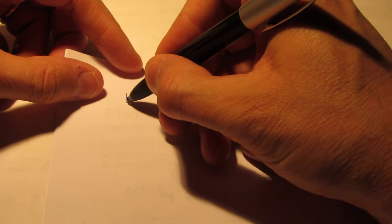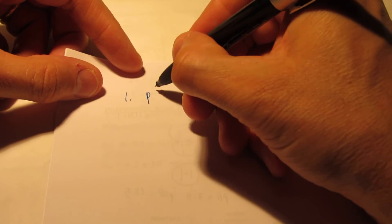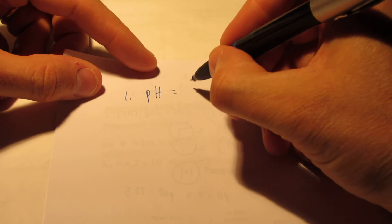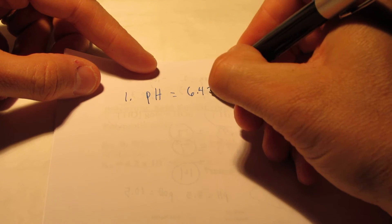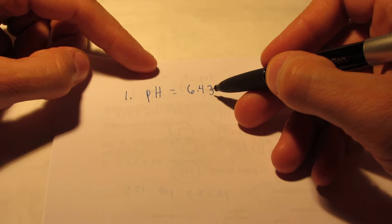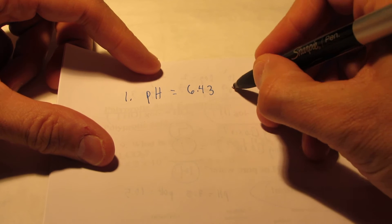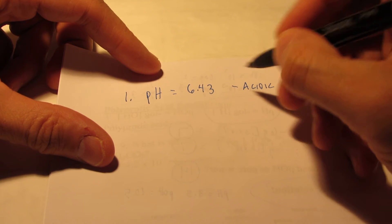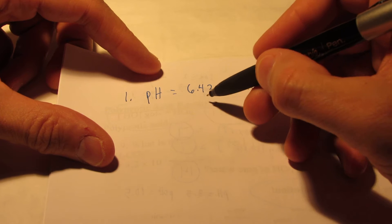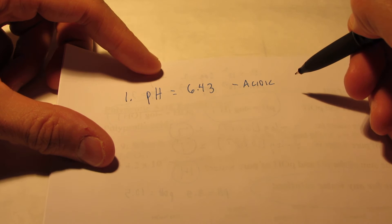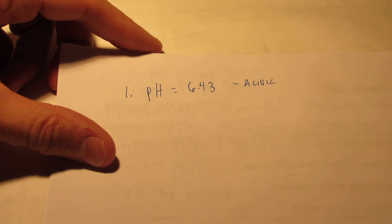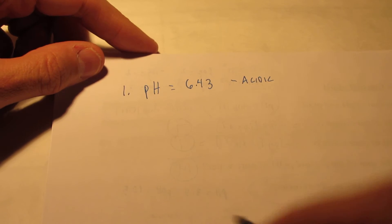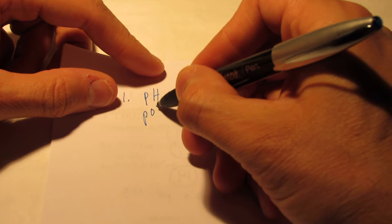Now let me do a couple of problems for you. Let's do number 1. I'm going to give you a pH of 6.43. Now first of all, that's a pH lower than 7, so we know that that's acidic. True story. Remember 7 is neutral. The lower you get, the more acidic it becomes. The higher you get, the more basic it becomes. So I want to know a few things. First of all, what's the pOH?